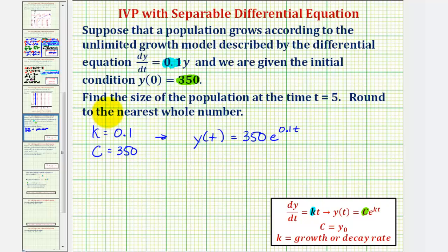And therefore, to find the size of the population at time t equals 5, we need to evaluate this function at t equals 5, or find y(5). Which would be 350 times e raised to the power of 0.1 times 5. And now we'll go to the calculator and round to the nearest whole number.